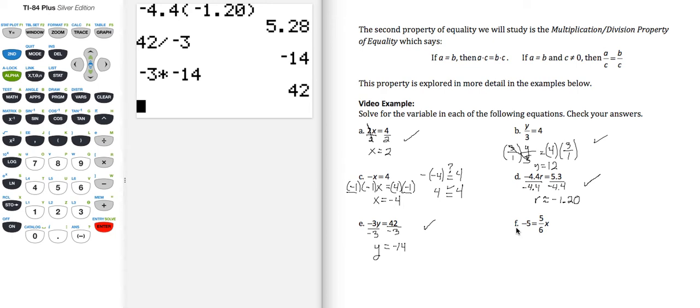Part F, I have negative 5 equals 5, 6, x. So the x is over here on this side. Let me write this with a little bit of room here. Negative 5 equals 5, 6, x. Because what I want to do to get x by itself is I want to multiply both sides by 6 over 5. So notice that's the reciprocal of 5, 6. The 6s will cancel. The 5s will cancel, leaving me with 1.